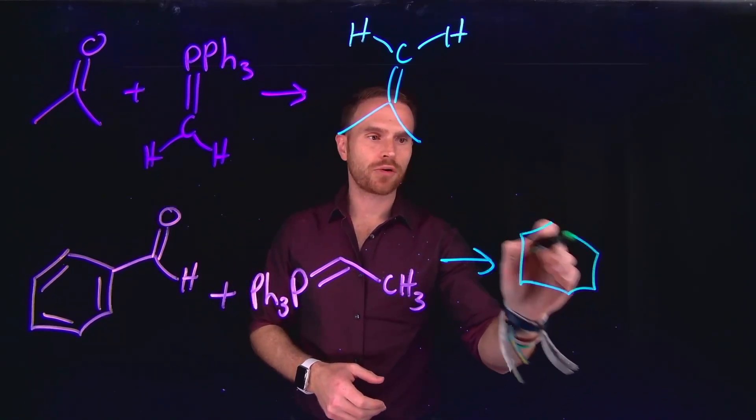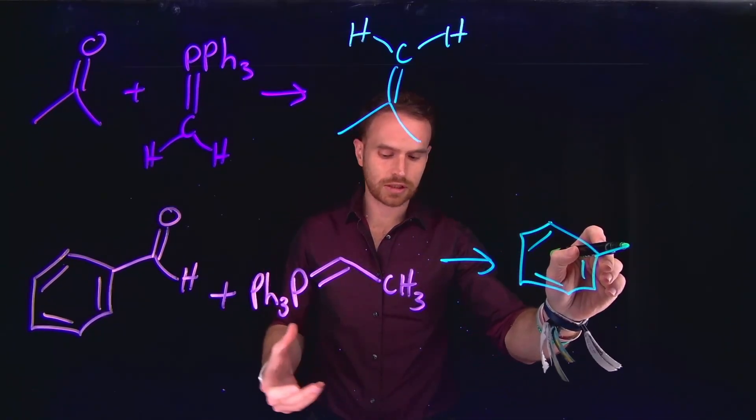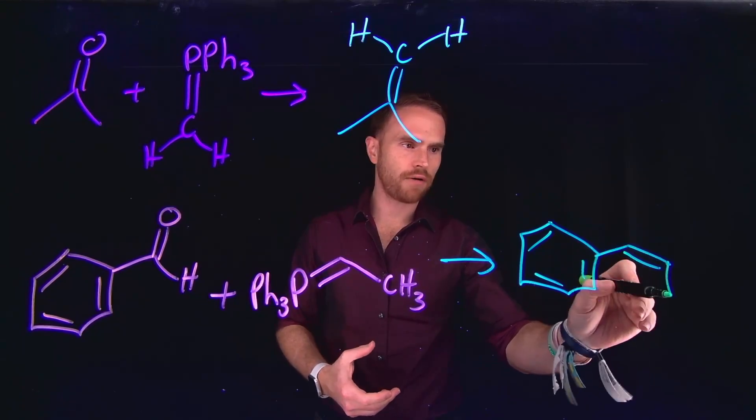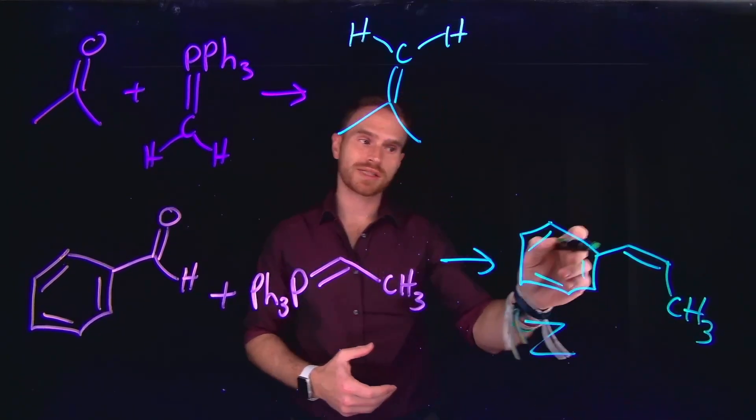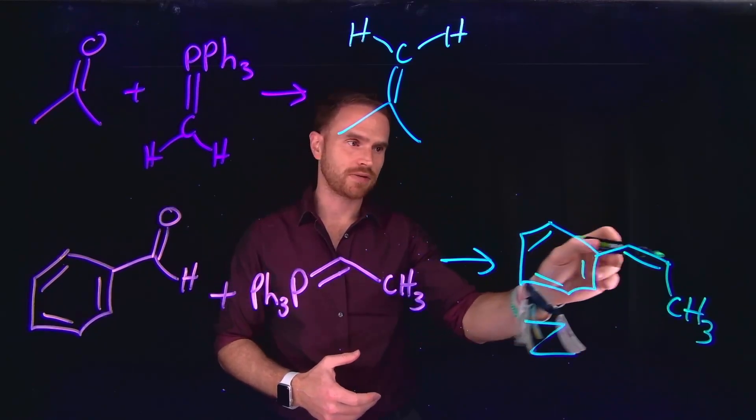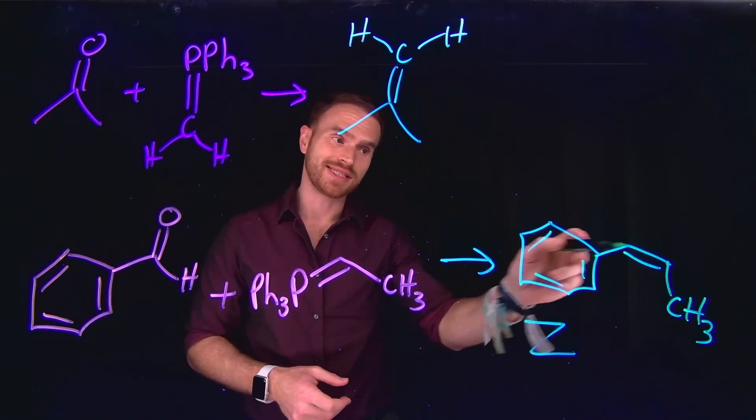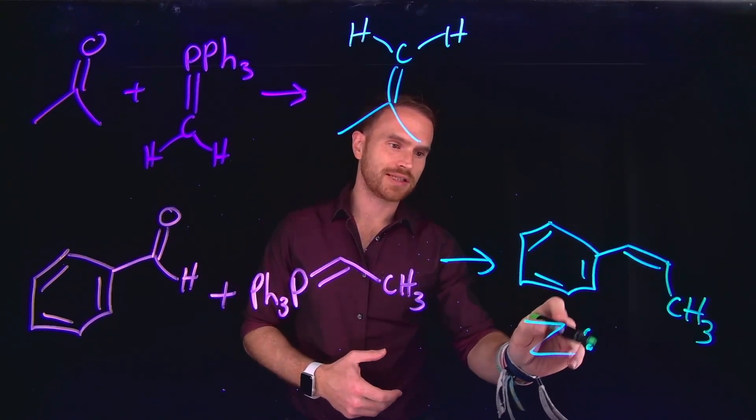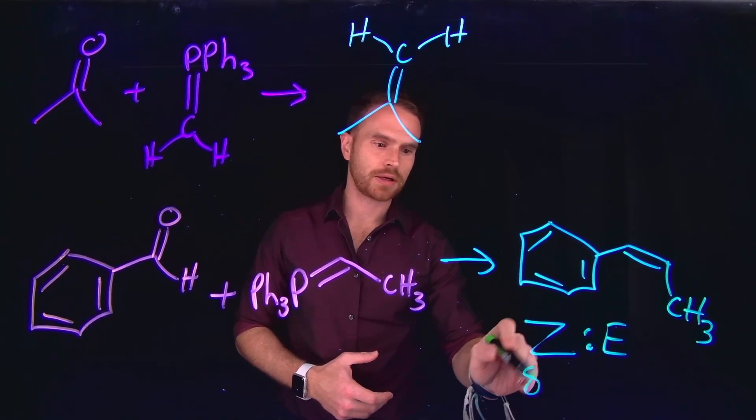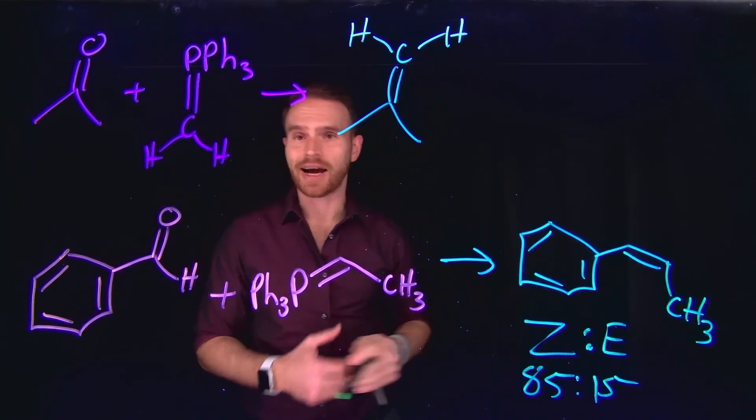However, it turns out that generally speaking, the produced species is going to oftentimes, in most cases, be the Z isomer. So this is the Z isomer. Remember, each of these alkyl groups coming off the alkene are on the same side. So we call this the Z isomer. And it turns out that the ratio of Z to E is typically around 85 to 15% Z isomer.